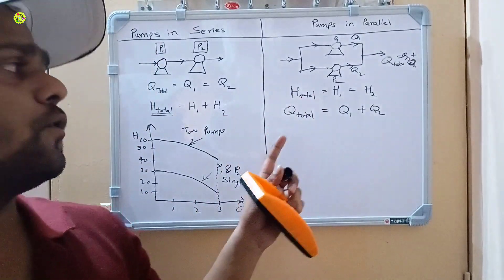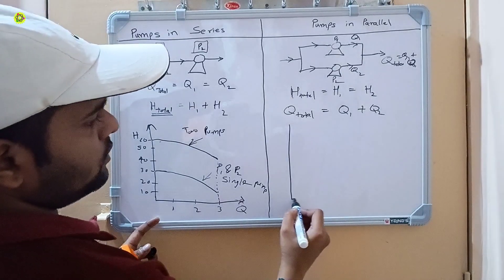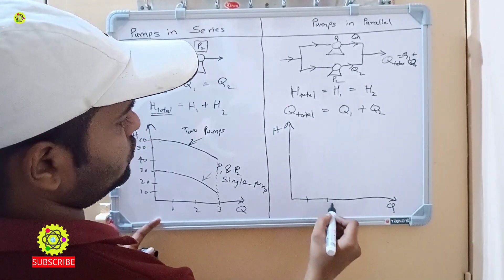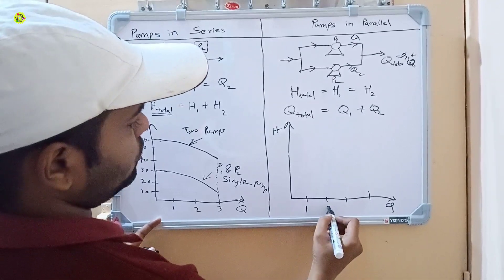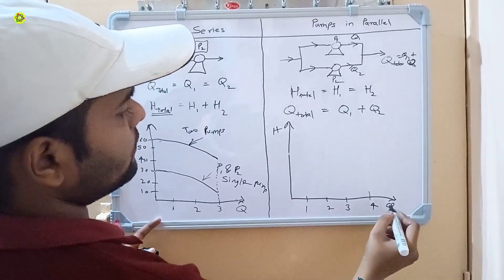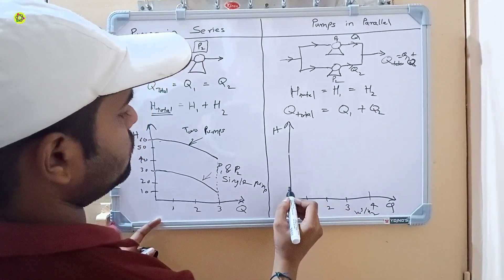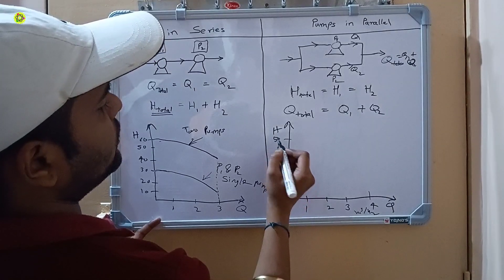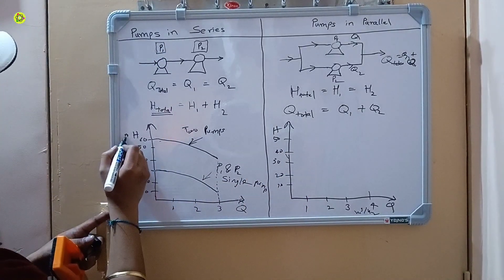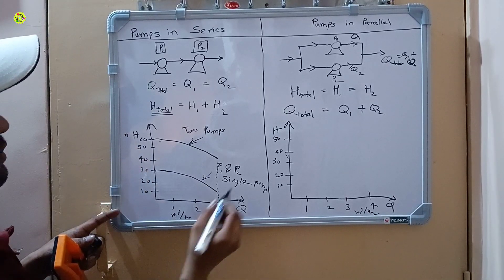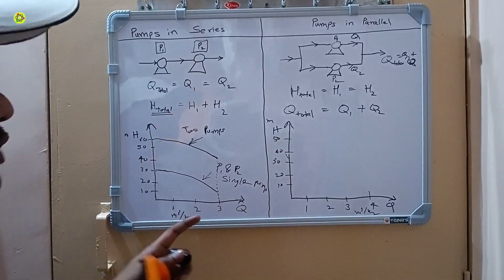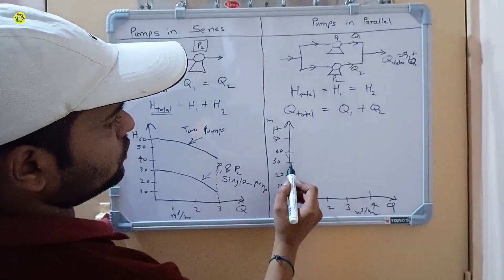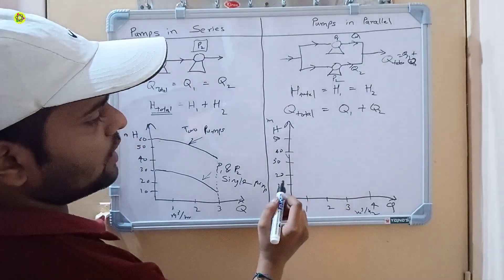On the graph for parallel pumps, the Y-axis is head H and the X-axis is flow rate Q, with values of one to four meter cube per hour and head from 10 to 50 meters. Head is constant for both pumps. Suppose we have 30 meter head and for a single pump we are getting two meter cube per hour flow rate.